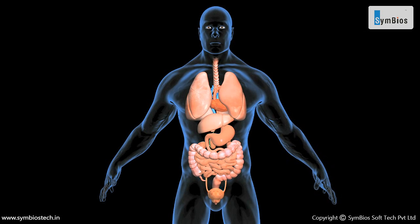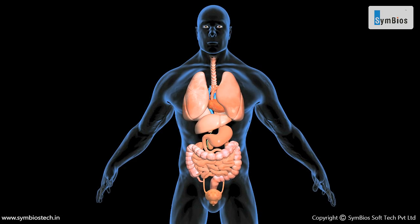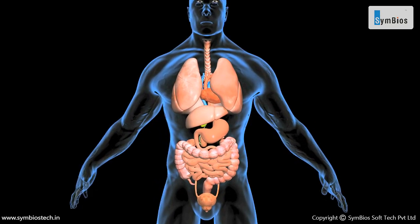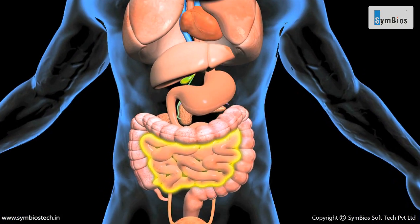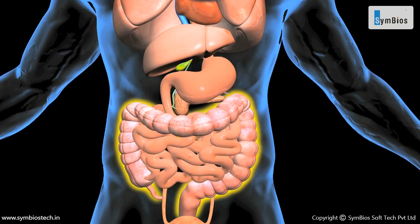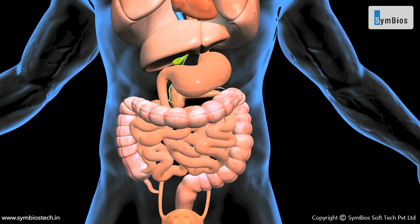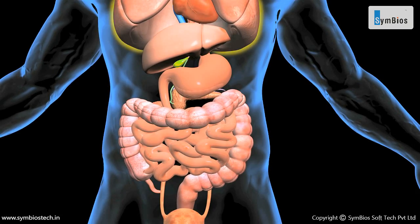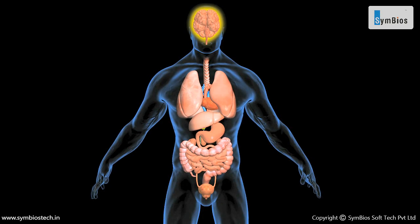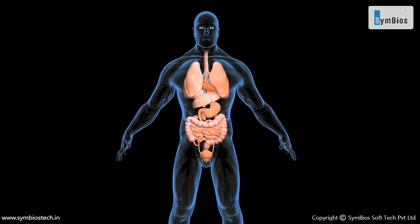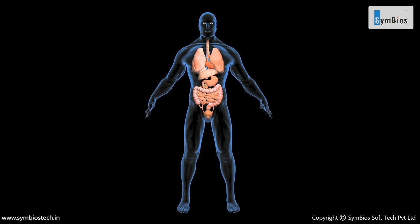Each organ is made up of more than one type of tissue. The human digestive system contains organs such as the stomach, small intestine, large intestine, liver, and gallbladder, which work together to digest our food. The lungs, kidney, and brain are some of the other organs present in the body of any animal, each with its own specific function.